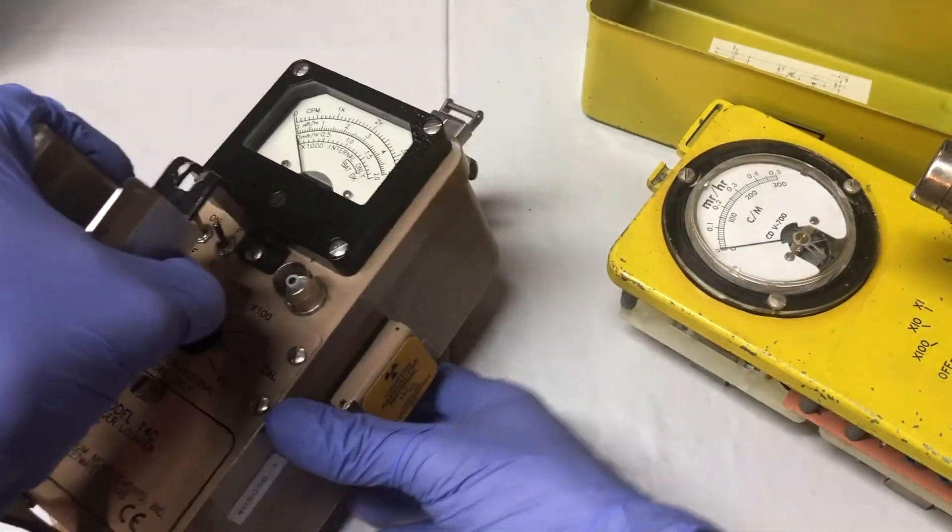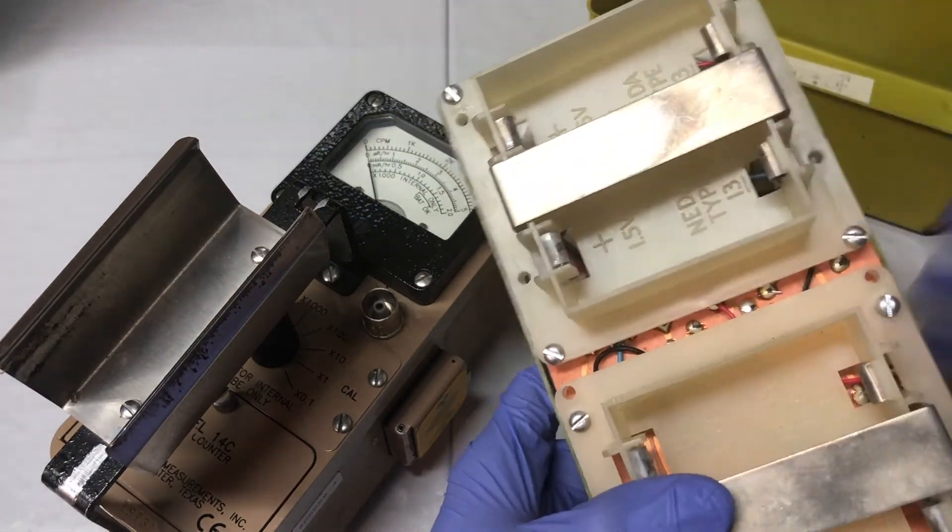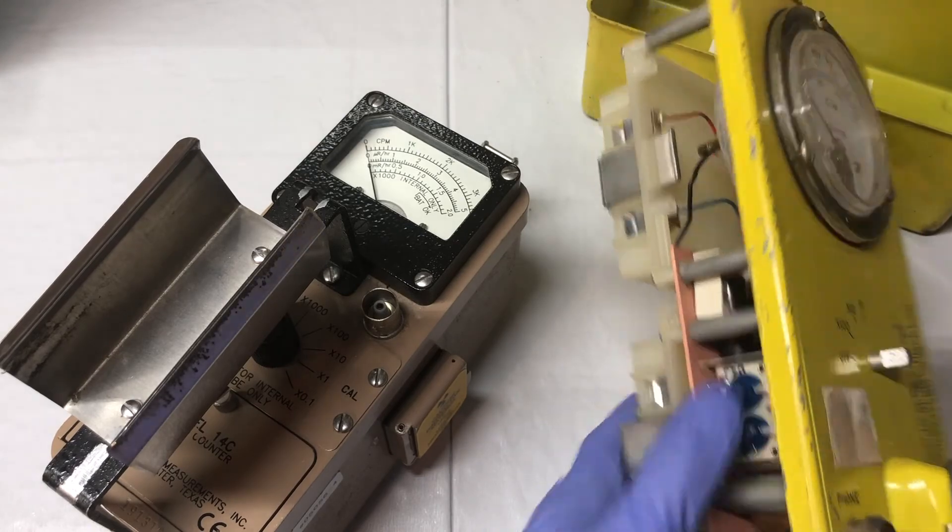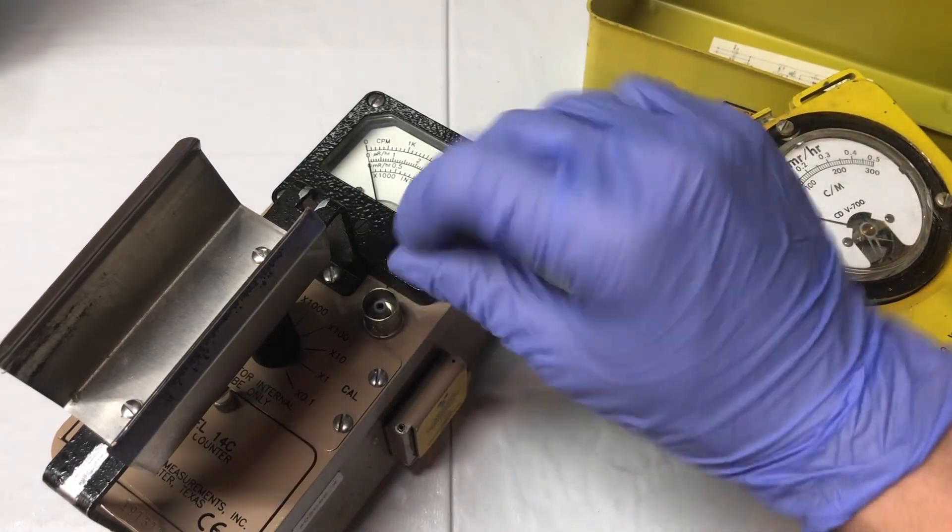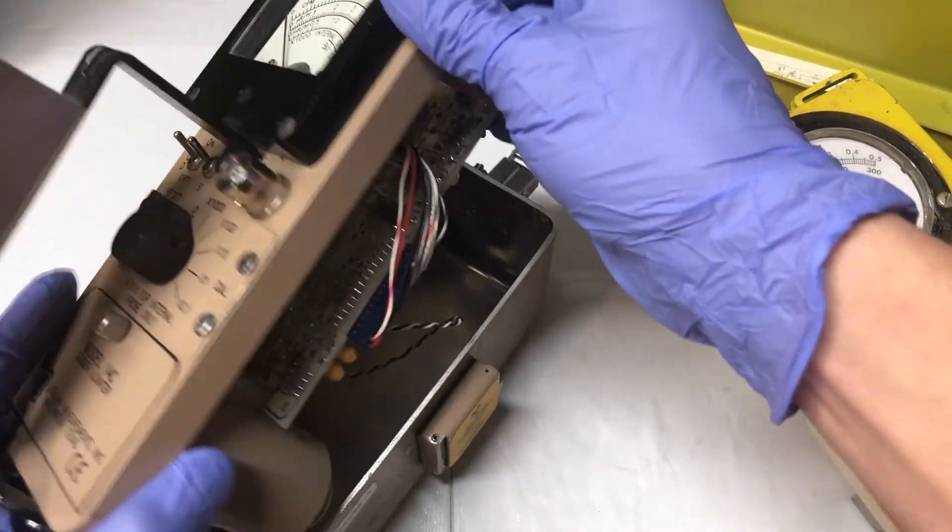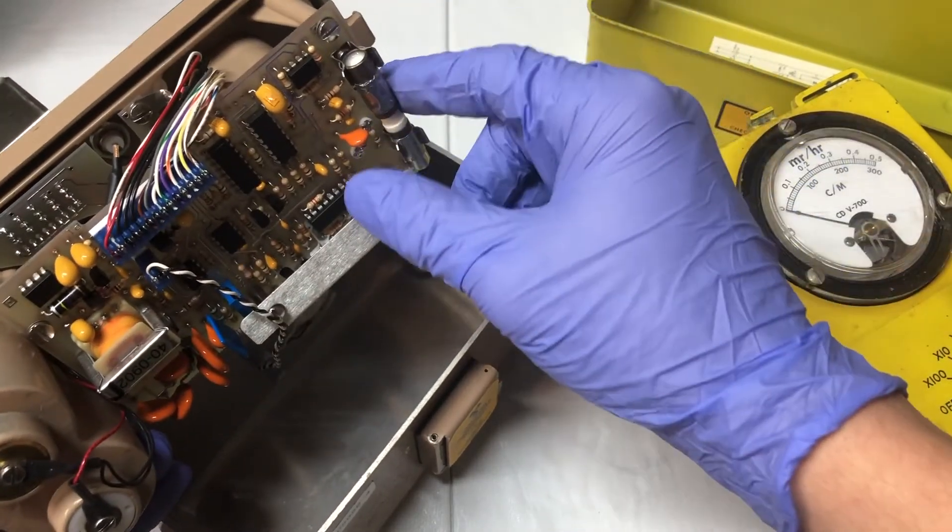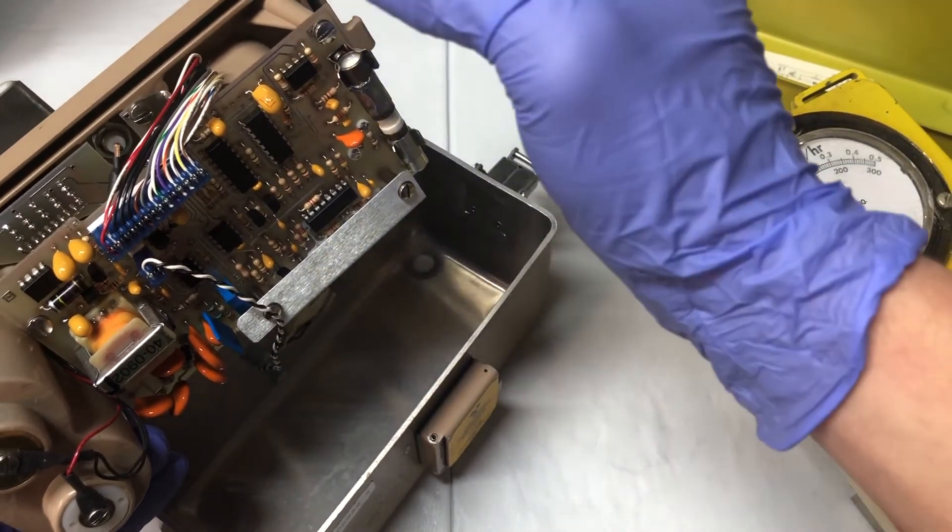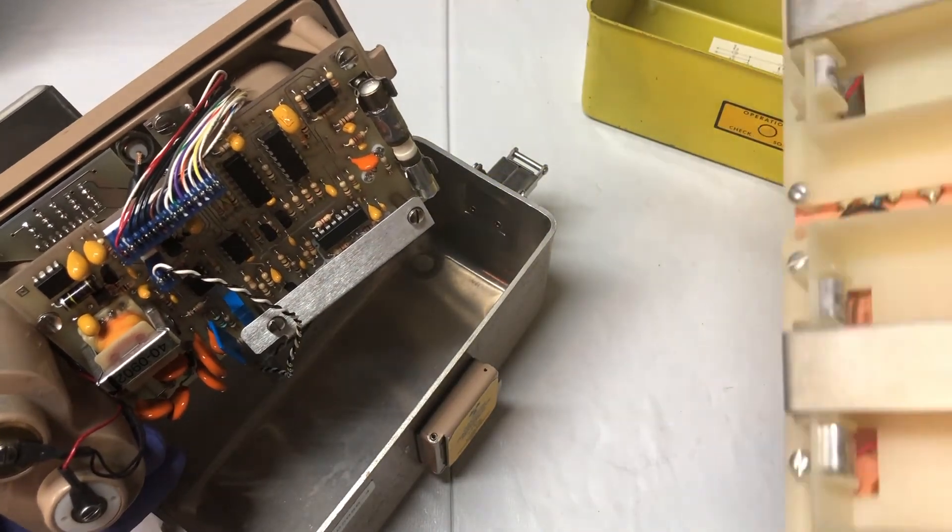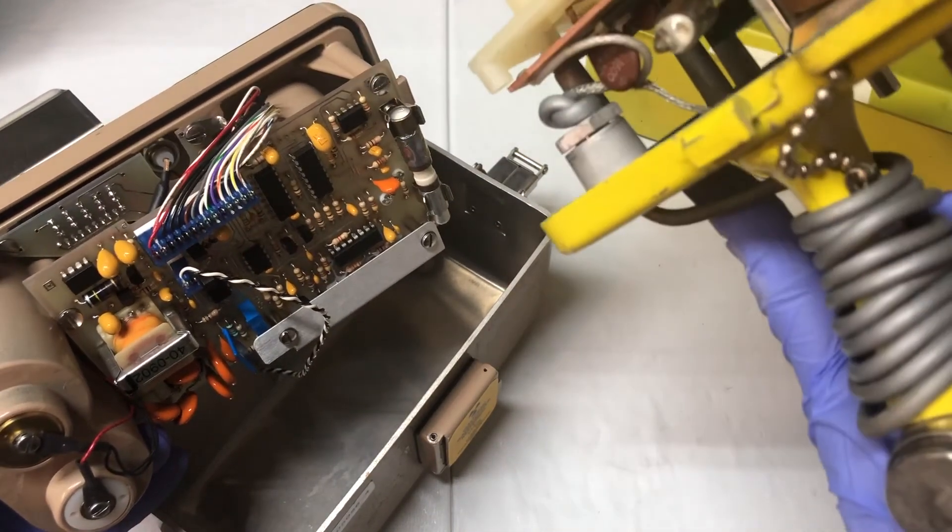The Ludlum only runs off two D-cell batteries while the 1960s CDV-700 runs off four. This one has the calibration inside, and this one has external calibration where you remove these panels and you can calibrate the high voltage. And here is the internal GM tube where when it's set at times 1000, it can measure the radiation. This one does not have anything of that kind and has very basic components.